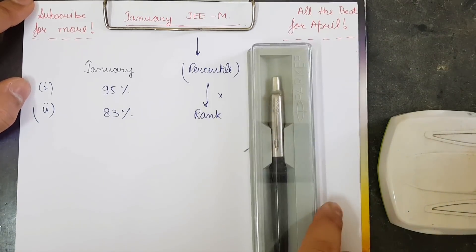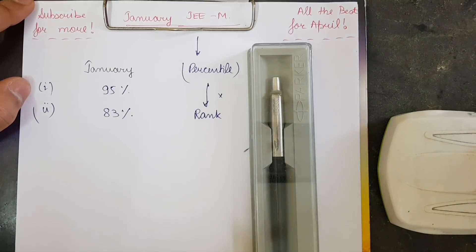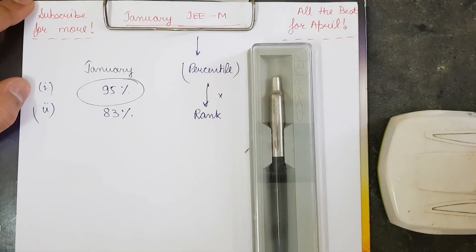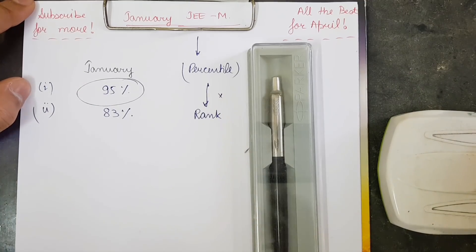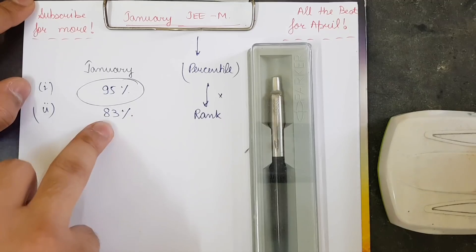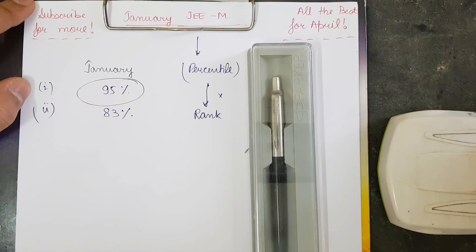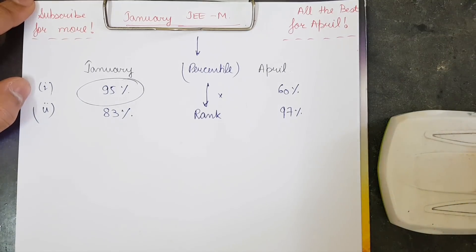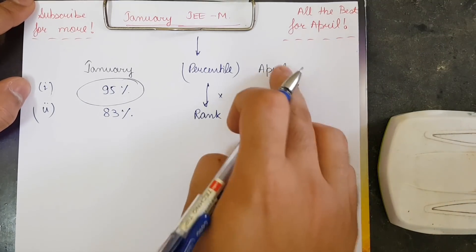Now, if I hide the April results for a moment, people would say that student 1 has performed better than student 2. So student 2 — which many of you might actually relate to — would be very depressed, feeling that you still have a lot of work to do.